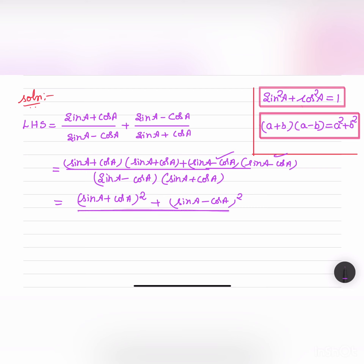For the denominator, we have (a + b)(a - b), which equals a² - b², giving us sin²A - cos²A.